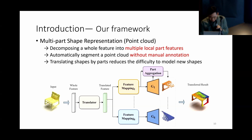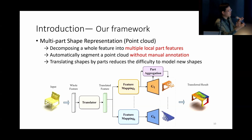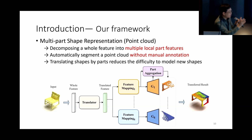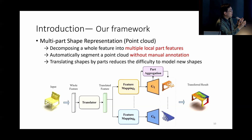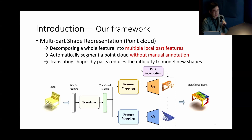We decompose the big generator into smaller parts, transfer them individually, then use a refinement model called part aggregation to refine those parts and combine them together into a better result.